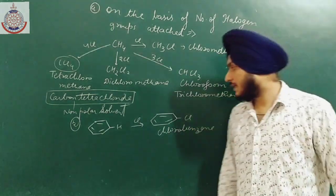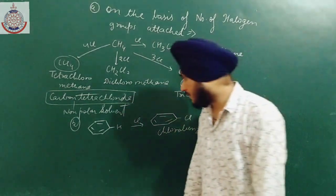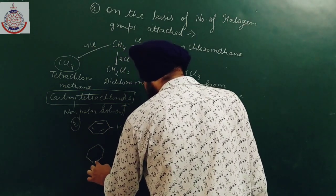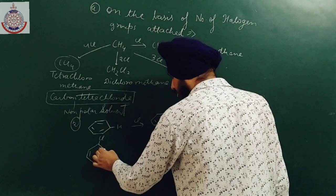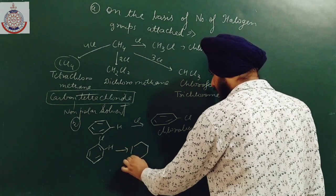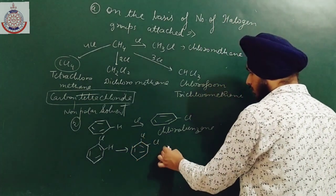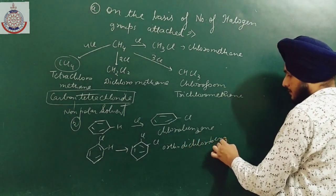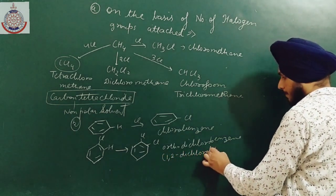If I replace a second hydrogen, we have three options. The first is replacing the hydrogen on the second carbon atom, which gives orthodichlorobenzene, also written as 1,2-dichlorobenzene.